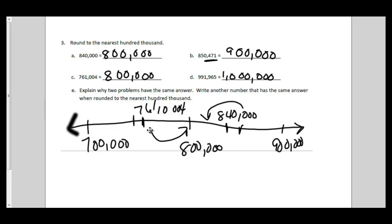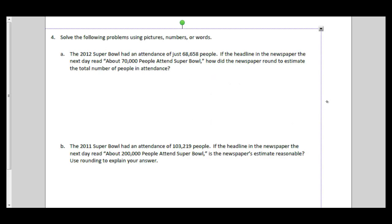The Super Bowl had an attendance of 68,658 people. If the newspaper headline read 'about 70,000 people,' how did they round? Looking at 68,658 and the result of 70,000, they had to round to the nearest 10,000. If they had rounded to the nearest 1,000, it would have been 69,000 instead.